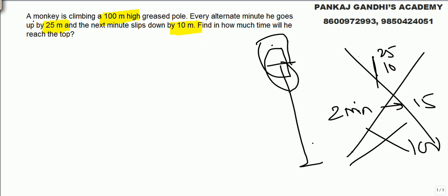The simple logic for these kind of questions is once monkey reaches the top it does not come back. So assume the height of the pole is only 25 meters. In one minute only the monkey will reach the top.